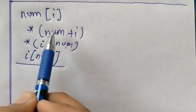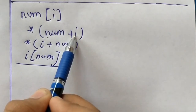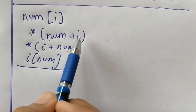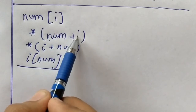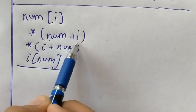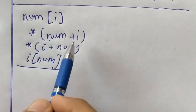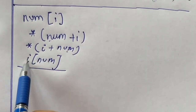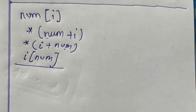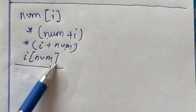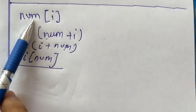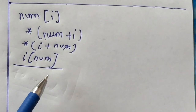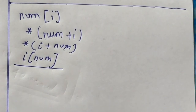To prove this — since `num` was in the array position and `i` was the index, if you reverse them, writing `i[num]` is valid. To prove that all these notations are equivalent and they all specify the value of `num[i]`, we'll see an example and implement it on the laptop.